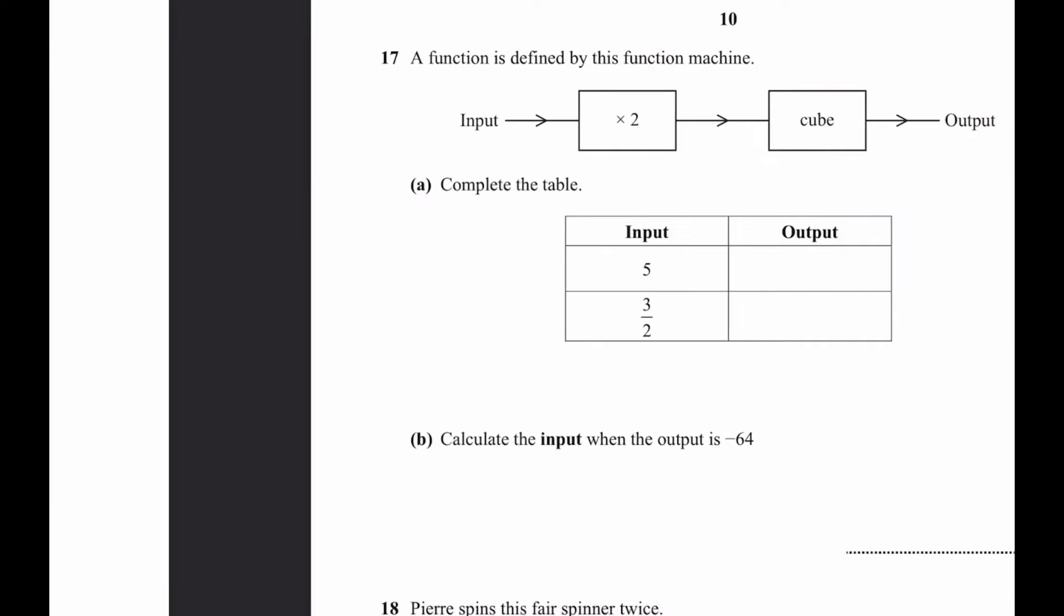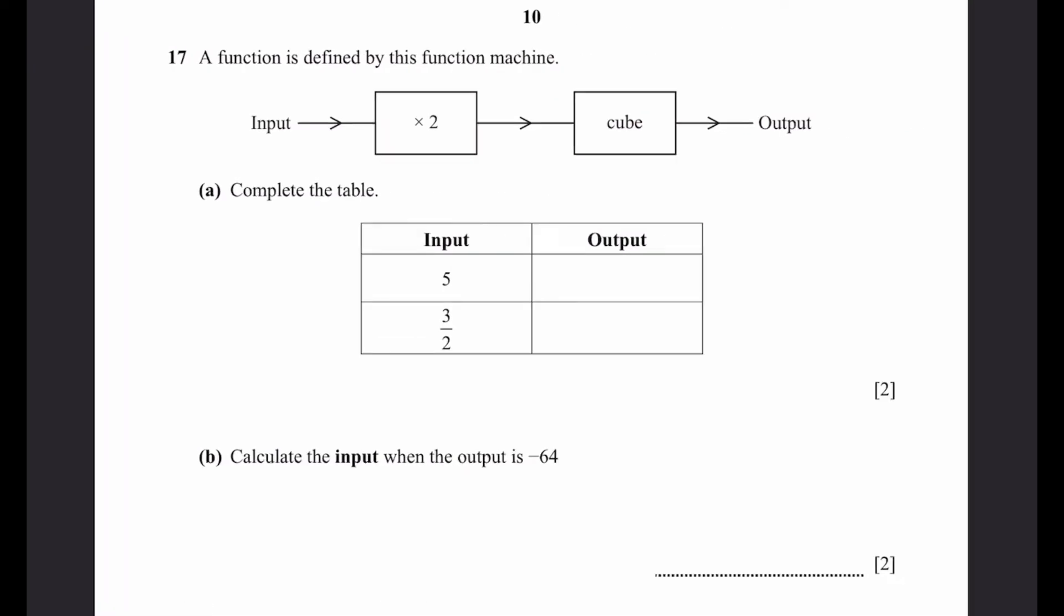Now I can go to question 17. A function is defined by the function machine. Input times 2, cube, output. A, complete the table. Input is 5. Output will be 5 times 2, the whole cube. That's 10 cubed, which is 1,000. Next is 3 by 2. Now if you multiply this by 2, we get 3. Now 3 cubed is equal to 27, which is going to be our output. That's the answer.